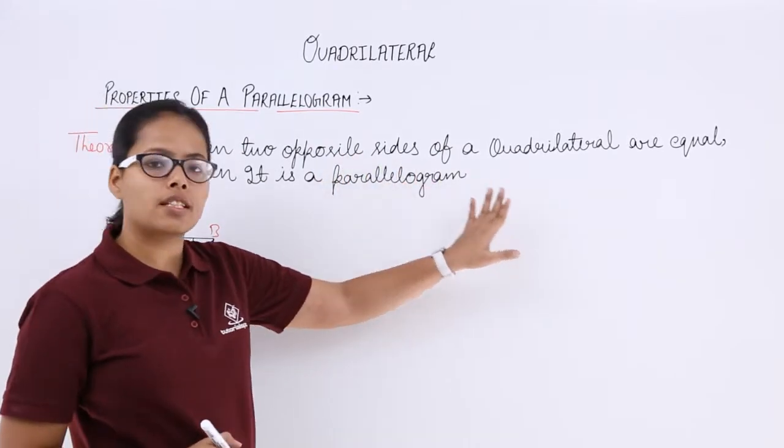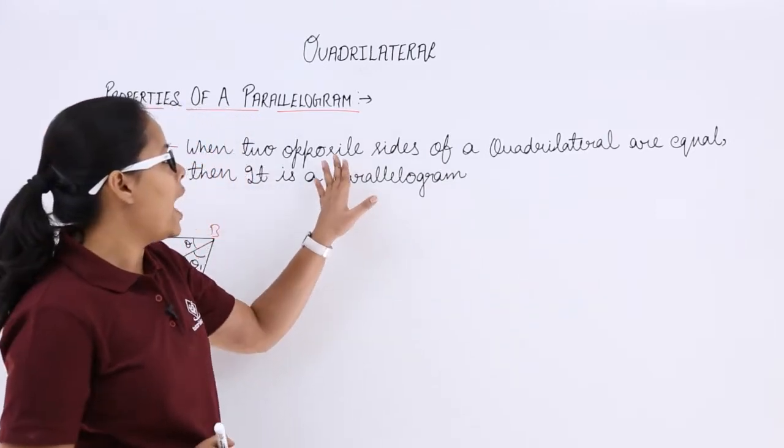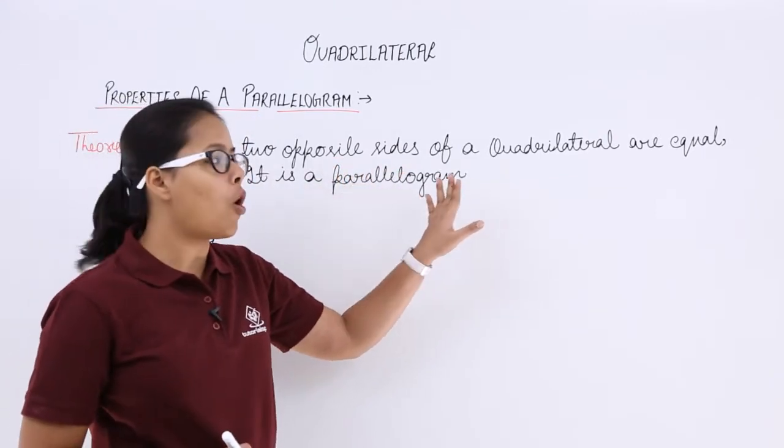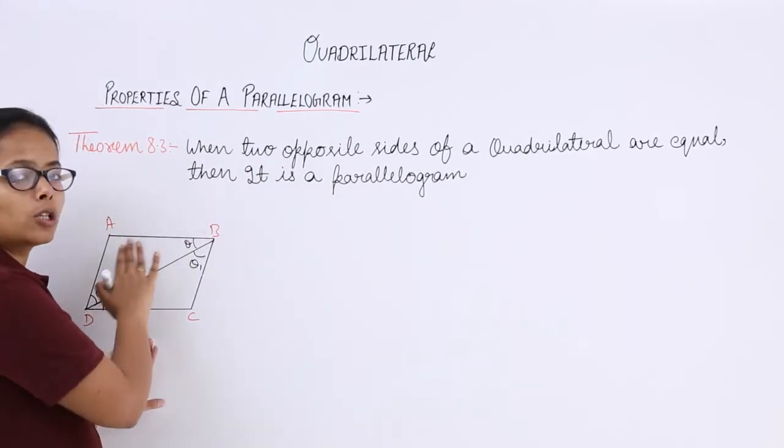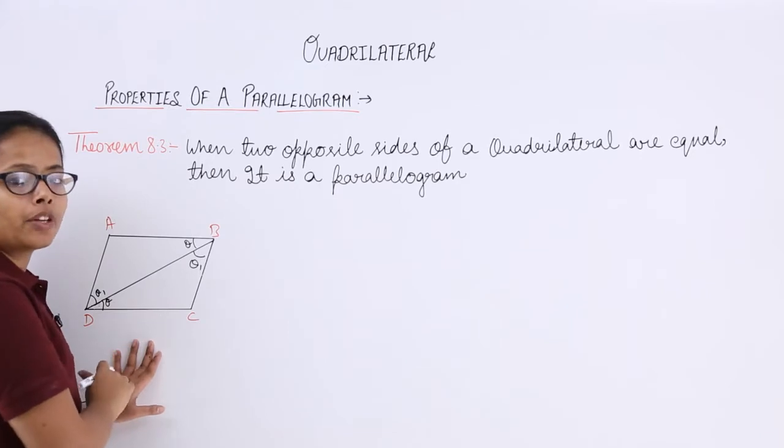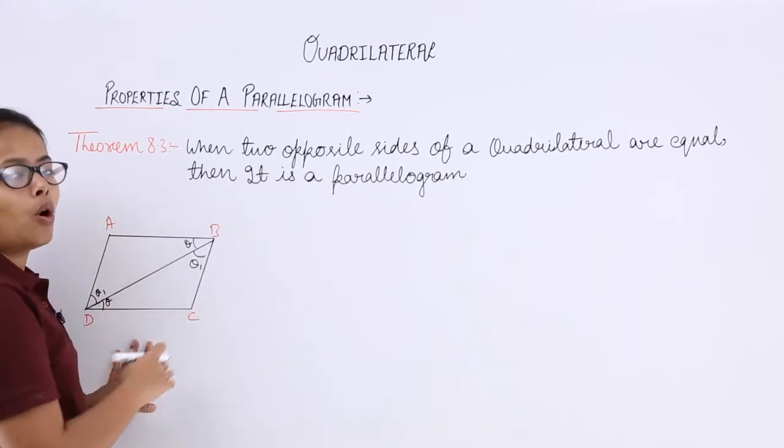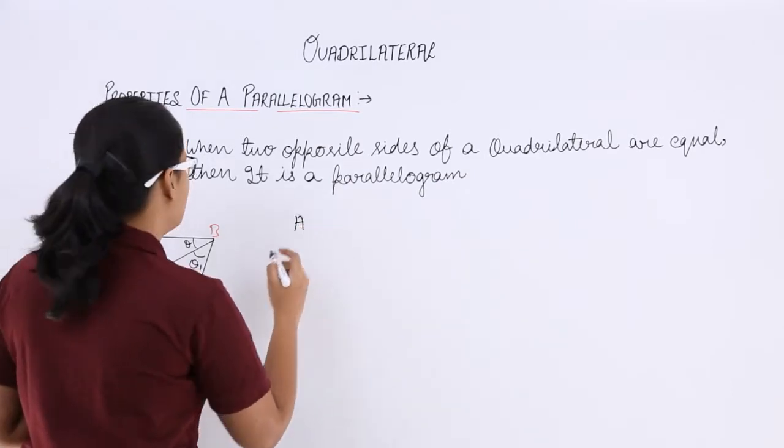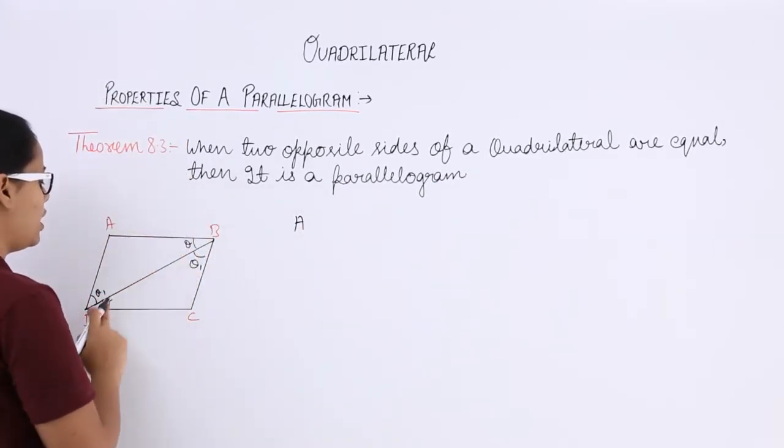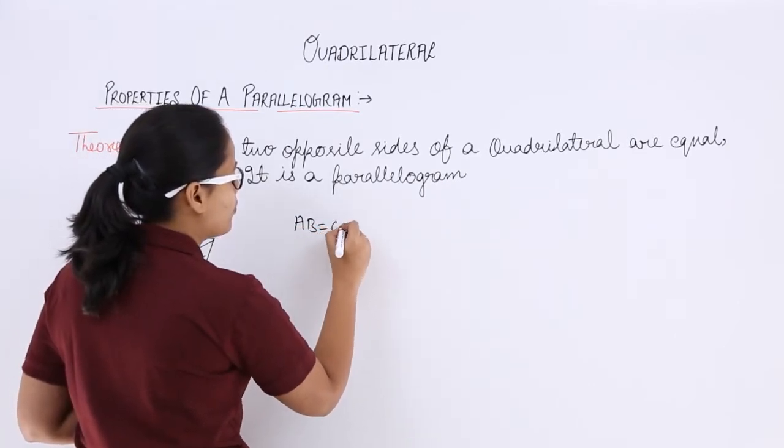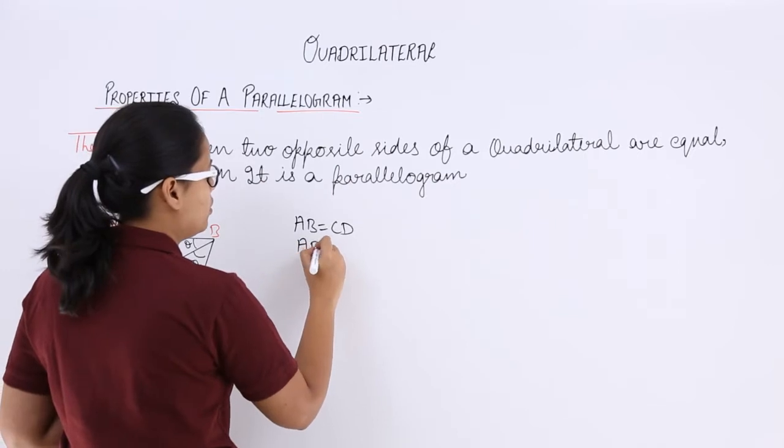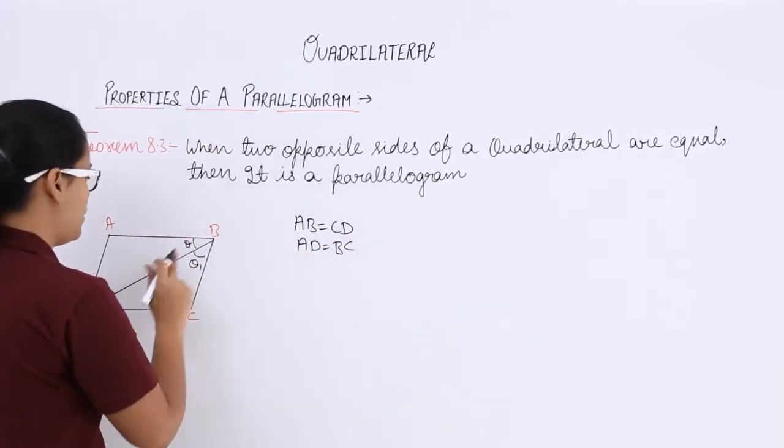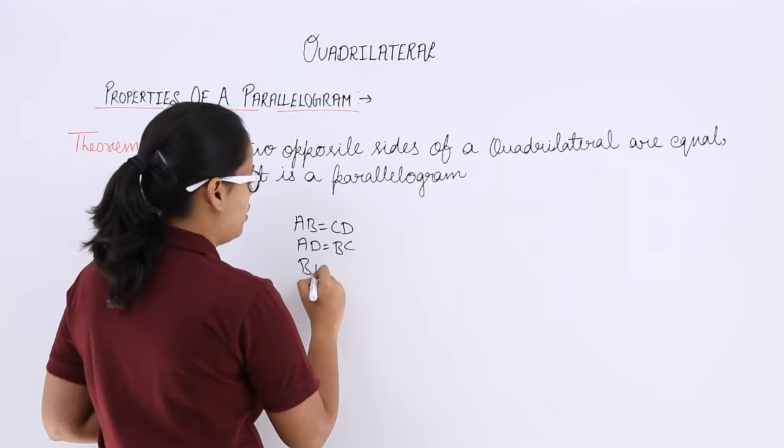It's been given to you that it's a quadrilateral and it has been also given that their opposite sides are equal. So, let's suppose it is also a quadrilateral ABCD where BD is a diagonal of this quadrilateral and you already know that opposite sides of this is equal. AB is equal to CD and AD is equal to BC and BD is equal to BD.